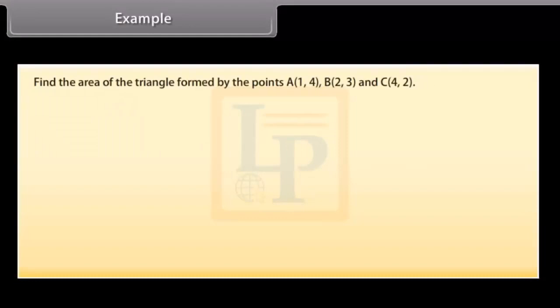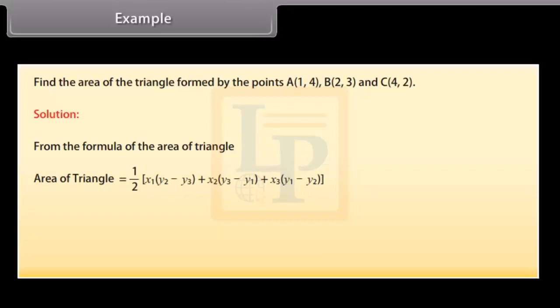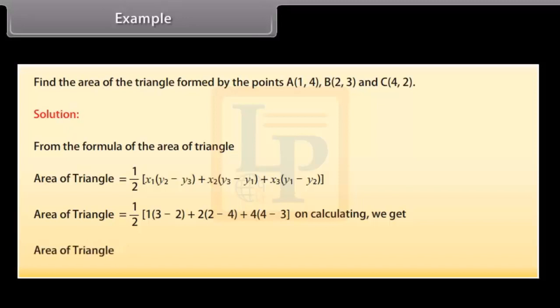Example. Find the area of the triangle formed by the points A(1,4), B(2,3), and C(4,2). Solution. From the formula of the area of triangle, area of triangle is equal to 1 by 2 into 1 upon 2, 2 square units.